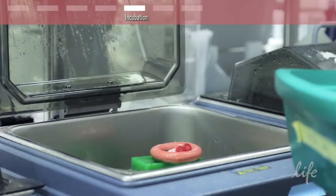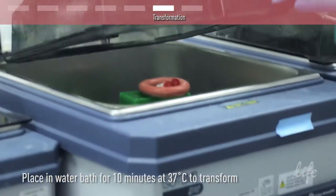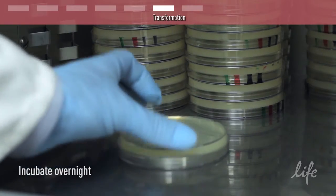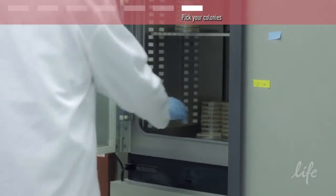Now that the assembly is complete, it is time to transform the DH10B competent cells provided in the kit and incubate them overnight. The next morning it's time to pick your colonies. We recommend picking four to five colonies.